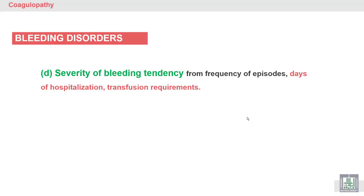Bleeding disorders - severity of bleeding tendency. By severity of the bleeding, we look at the period or the days of hospitalization. How many days in the hospital? This is first.